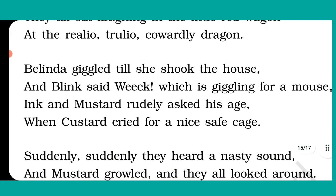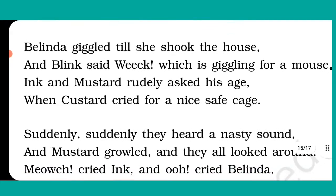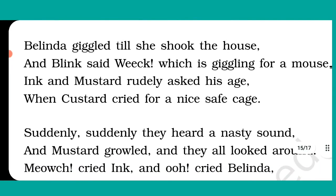In stanza 6: Valinda giggled till she shook the house, and Blink said 'weak,' which is giggling for a mouse. Ink and Mustard rudely asked his age when Custard cried for a nice safe cage.